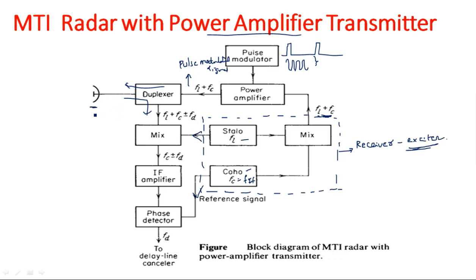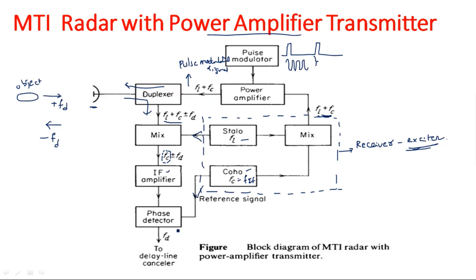During reception, the transmitted signal will have an added Doppler frequency depending on target movement. If the target is coming toward the radar, the Doppler shift is plus fd; if moving away, it is minus fd. So the received signal frequency is fl plus fc plus or minus fd. We need to eliminate fl and fc: first, the stable local oscillator signal is mixed to eliminate fl. Then an IF amplifier amplifies the fc component, since fc equals the intermediate frequency. Finally, the coherent oscillator output is given as a reference to the phase detector, which extracts only the required Doppler frequency fd.